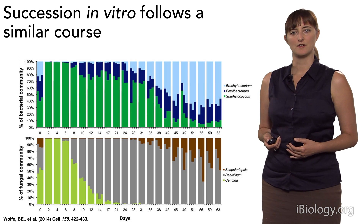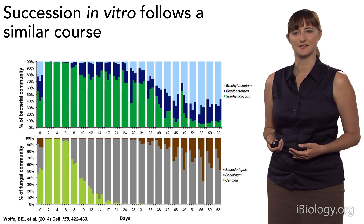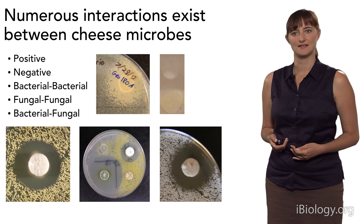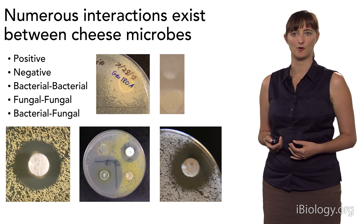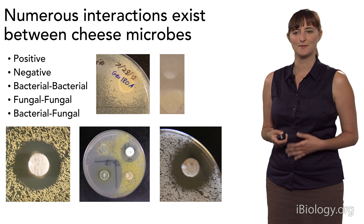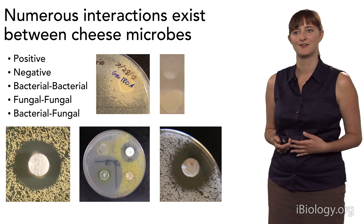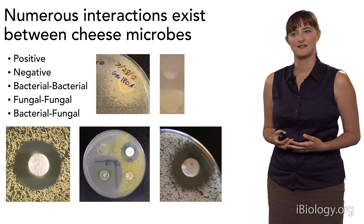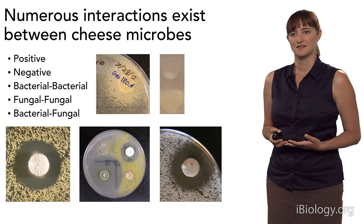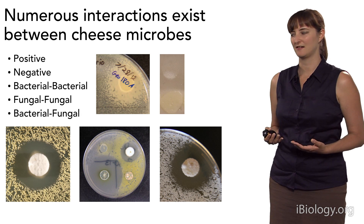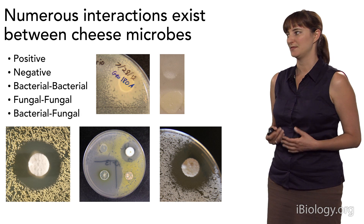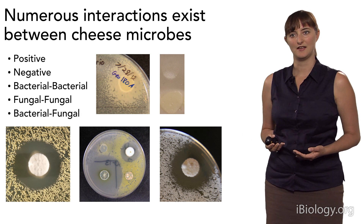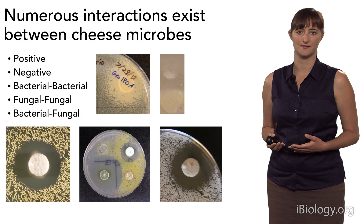One of the other things we're looking at in more detail are interactions between species. We have observed many different interactions between microbes isolated from cheese — examples of pretty much every type, both positive and negative, including interactions between bacteria, between fungi, and between bacteria and fungi. These include dramatic stimulation of bacteria by fungi, and very dramatic zones of inhibition seen upon growing fungi in the presence of certain bacteria.